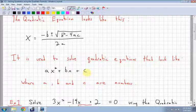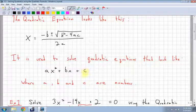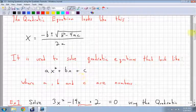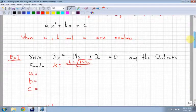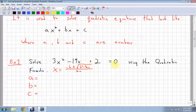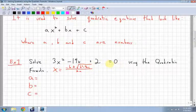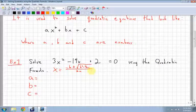It's gonna be negative b plus all this over 2a, and the other answer is negative b minus all this over 2a. So how do we use it? Well, it's used to solve quadratic equations that are in this form: ax squared plus bx plus c, where a, b, and c are numbers. You only really want to use the quadratic equation when you have it in the form like this. Example one, we're gonna solve this one: 3x squared minus 14x plus 2 equals 0.